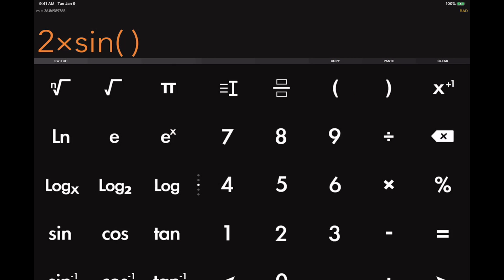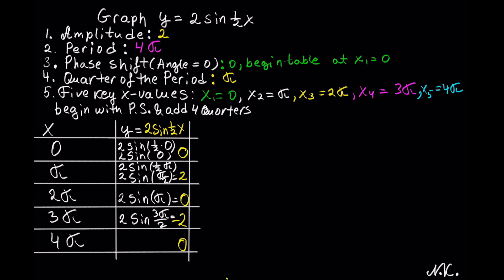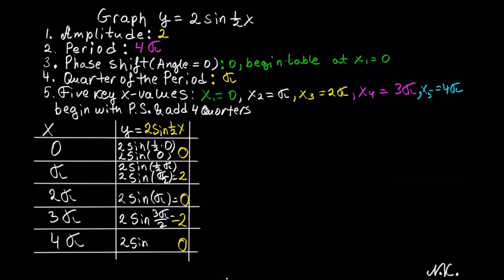Let's plug in 2 times sin of 3 pi over 2, and this is equal to negative 2. Last but not least, we plug in 4 pi into 2 sin of 1 half of x. Multiplying 1 half by 4 pi over 1 — 2 goes into 4 two times — this becomes 2 sin of 2 pi. 2 pi is coterminal with the 0 radian angle, so 2 sin of 2 pi is equal to 0 again.